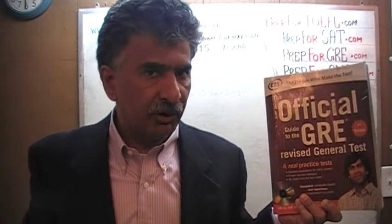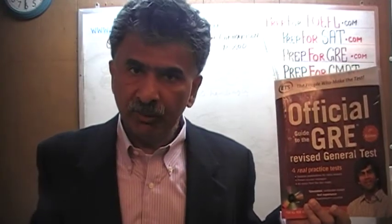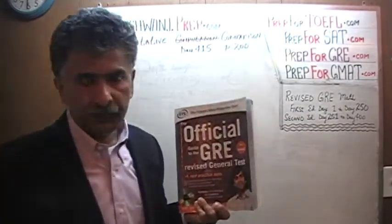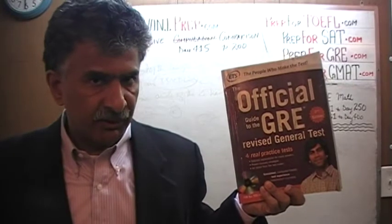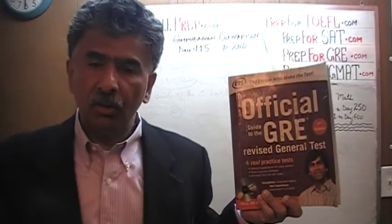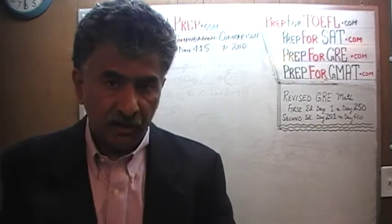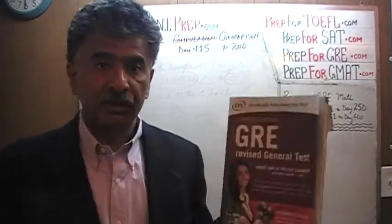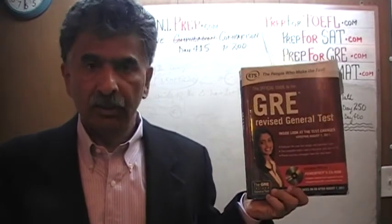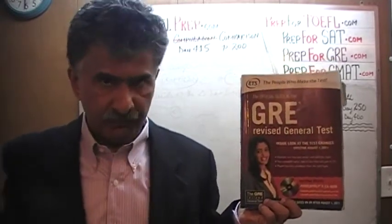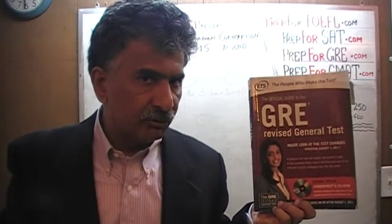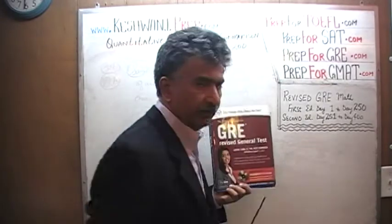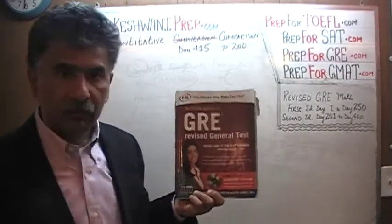If you are interested in watching a solution to any of the math problems from this book, you will find the solutions to the problems from day number 251 through 400. The problems that appear in this book, in the second edition, are almost all the same problems, appearing on exactly the same page numbers as the ones that appeared in the first edition of the revised GRE. We are done with all the problems from this book. If you are interested in watching any of the original solutions, you will find them from day number 1 through 250.